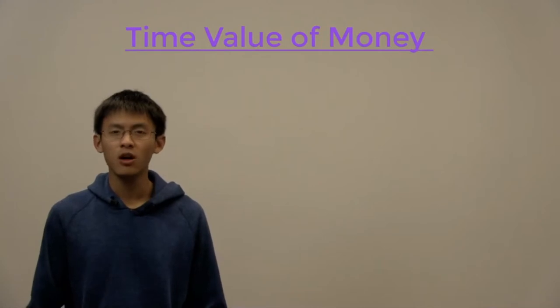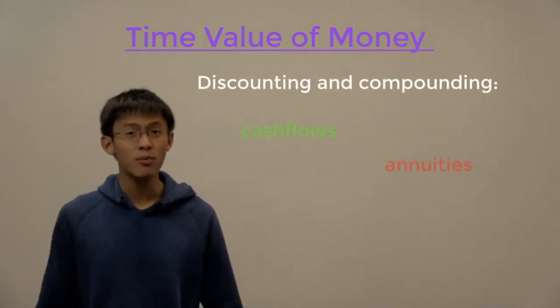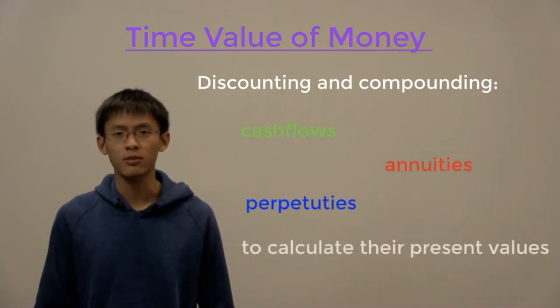Hello. So far in this video series, we have talked a lot about the time value of money. We discussed concepts such as discounting and compounding cash flows, annuities, and perpetuities in order to calculate their present values.